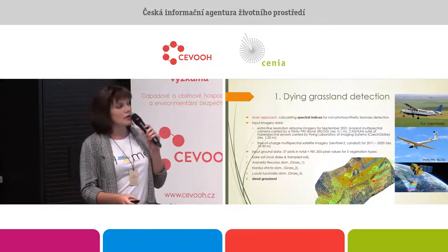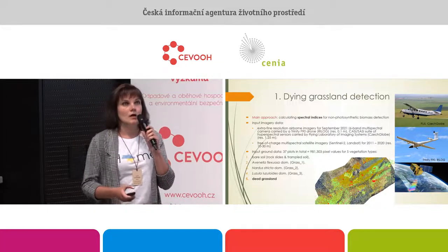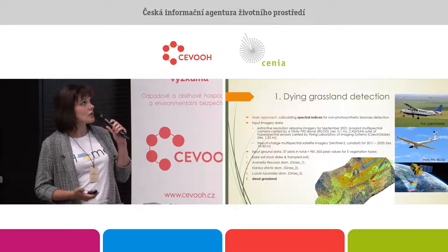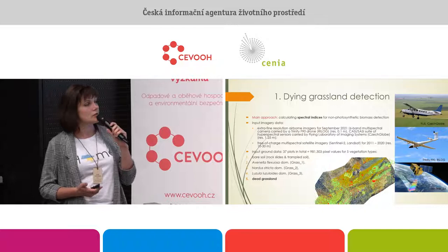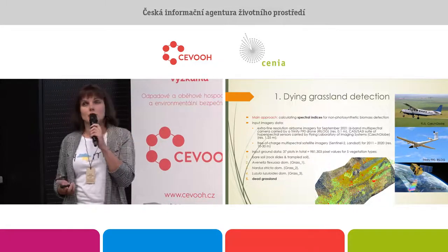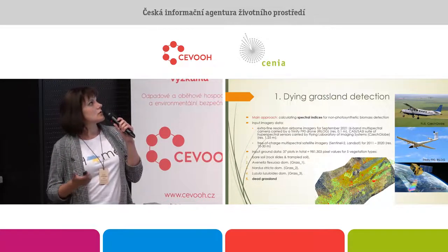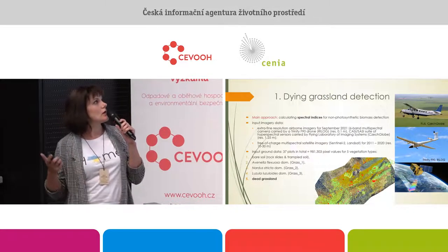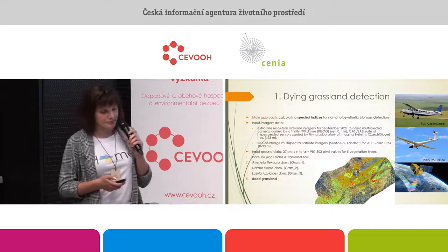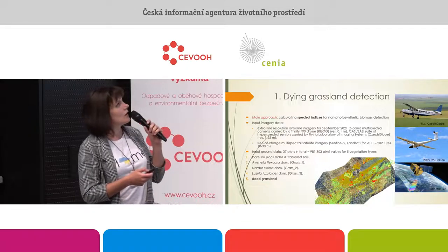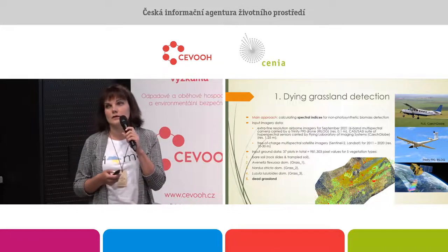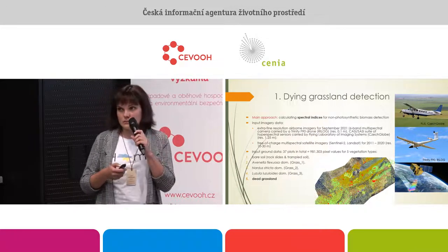For input ground data, we collected data in the field using 37 plots representing five habitat types: bare soil, dead grassland, and three types of living grassland. This provided us with almost a million spectral values in total for analysis.